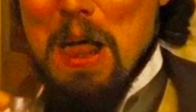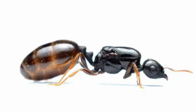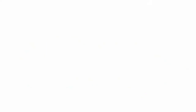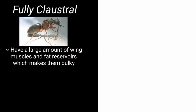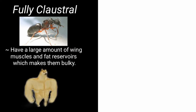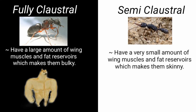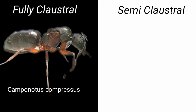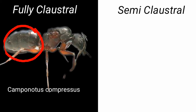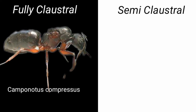If you want to be a bit more knowledgeable, what you need to know is that every queen has some big muscles and fat reserves which have food stored in them. In the case of a fully claustral queen, these muscles and fat reserves are found in very large amounts, which makes them bulky and fat. The semi claustral queens have very small amounts of these fat reserves, which makes them somewhat skinny. Also, a fully claustral queen has a very large gaster compared to its thorax — it's wider, taller, and lengthier.